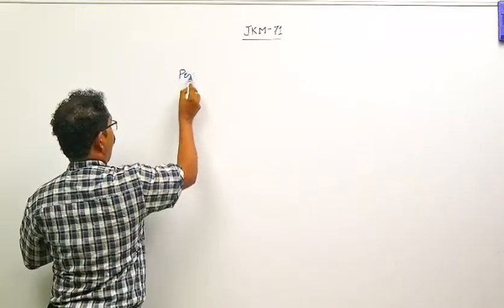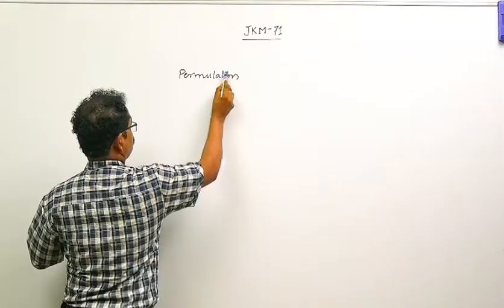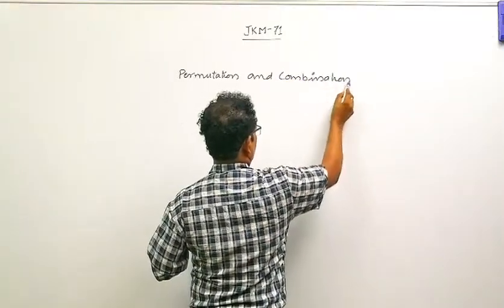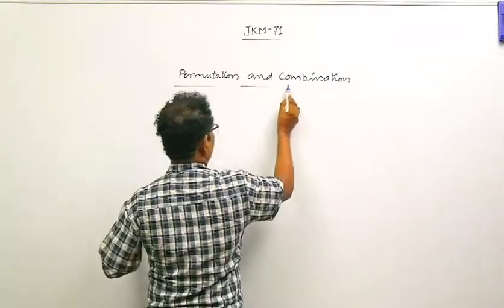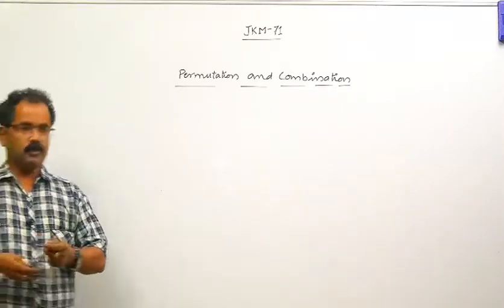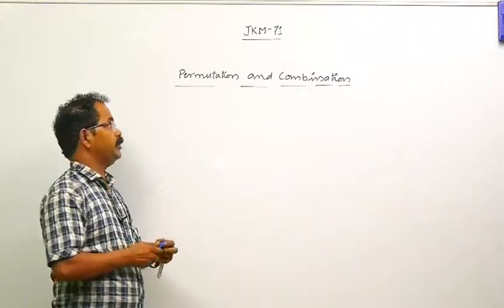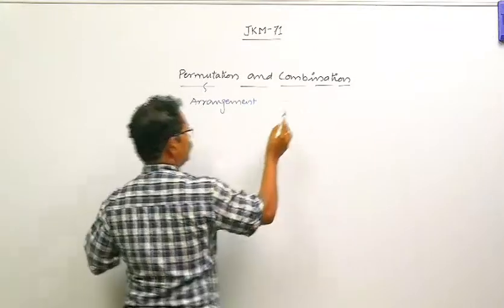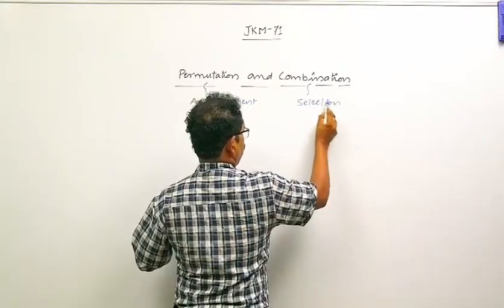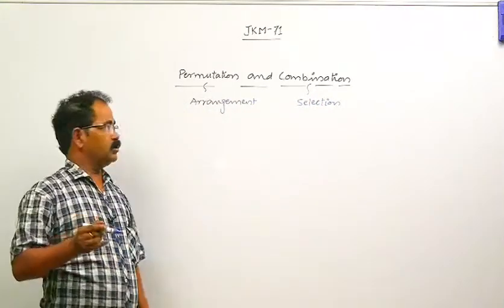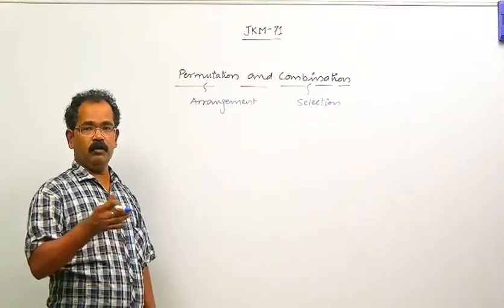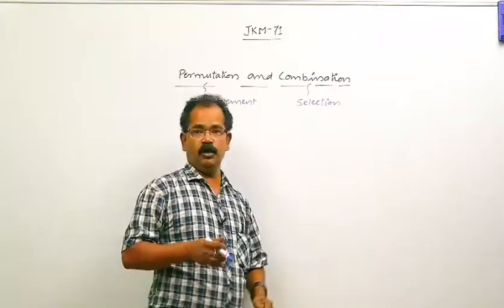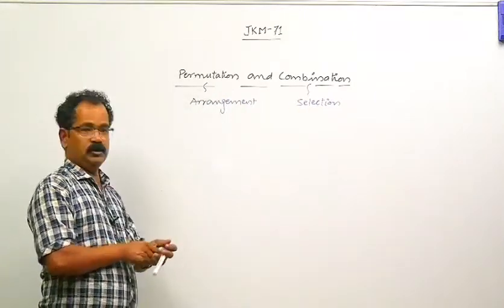Permutation और Combination में सबसे पहले बात करते हैं - Permutation का मतलब होता है arrangement और Combination का मतलब होता है selection। यह कुछ words हैं, अगर इनके synonyms पता रहें तो काफी questions में easy हो जाता है, क्योंकि students में problem यह रहती है कि कब P लगाना है, कब C लगाना है। इसलिए हम पहले Fundamental Method of Counting की बात करते हैं।